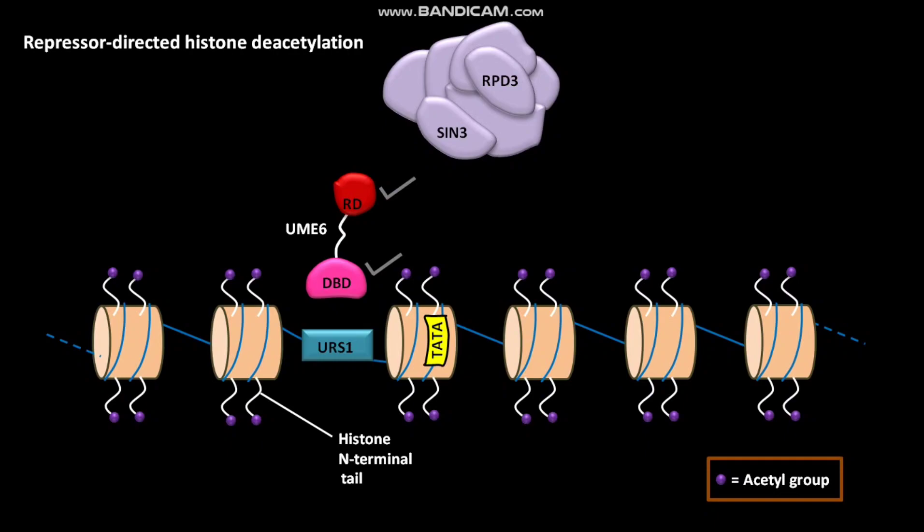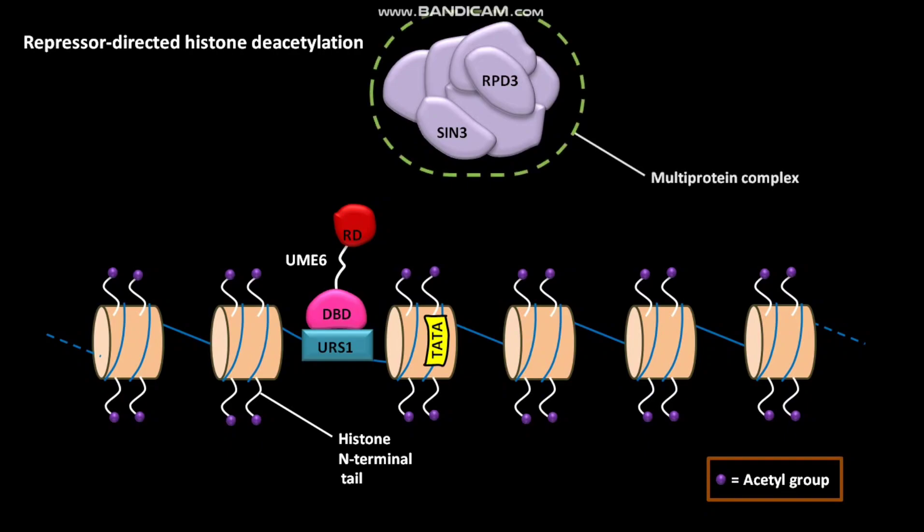The DBD of UME6 first interacts with a specific URS1 of the genes that are regulated by UME6. This is a multiprotein complex containing proteins like SIN3 and RPD3.